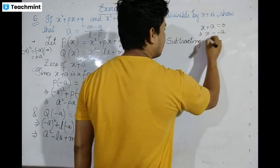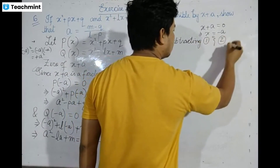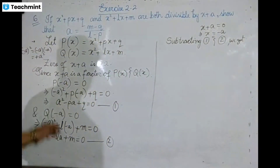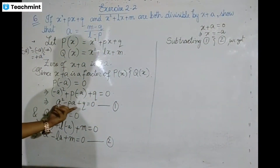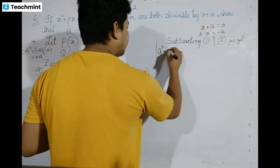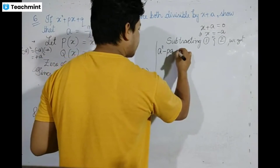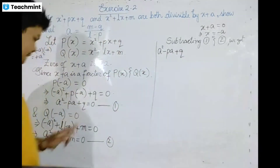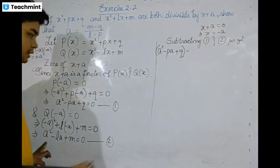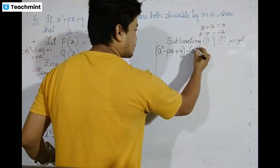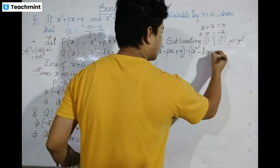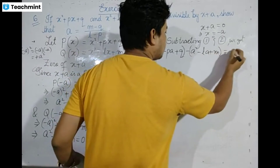Now subtracting equation 1 and equation 2. From equation 1 we have a squared minus pa plus q equals zero, and from equation 2 we have a squared minus la plus m equals zero. Subtracting equation 1 from equation 2.